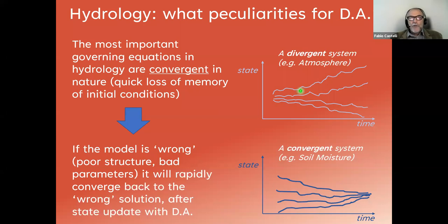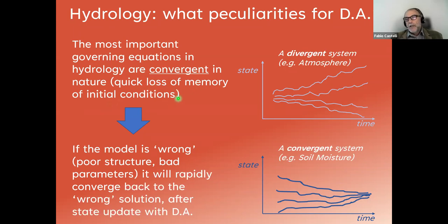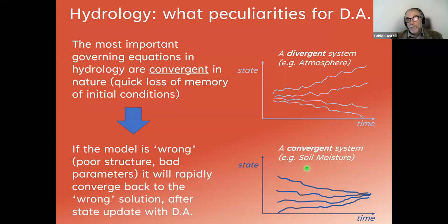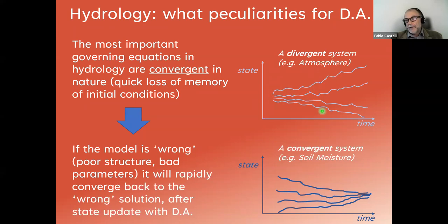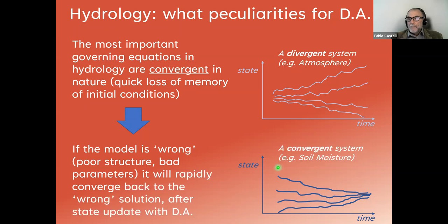Strictly connected with this issue is that most of the important governing equations in hydrology are convergent in nature, with a quick loss of memory of initial conditions — the opposite of what we call the butterfly effect. Here on the right is a cartoon of what we may intend for a divergent system, like the atmosphere, or a convergent system, like soil moisture. In a divergent system, small changes in initial conditions may lead to very divergent tracks in time. In a convergent system, the opposite may occur — even very distant initial conditions may bring the system to evolve toward the same final state.